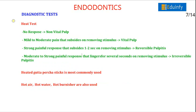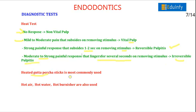In the heat test, no response indicates a non-vital pulp. Mild to moderate pain subsiding on stimulus removal indicates a vital pulp. A strong painful response subsiding 1–2 seconds after removing stimulus indicates reversible pulpitis. Moderate to strong painful response that lingers for several seconds after stimulus removal indicates irreversible pulpitis. For the heat test, heated gutta-percha sticks are most commonly used; other methods include hot air, hot water, and hot burnishers.